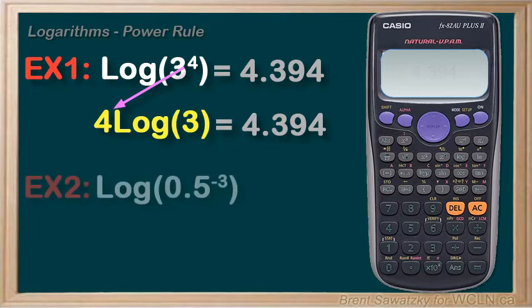Example two, log of 0.5 to the power of negative three. We have a negative in the exponent. Thinking back to restrictions, we need a positive base, and in this case the base will be 10. Check.